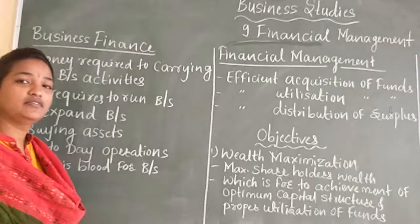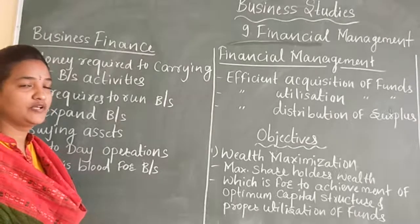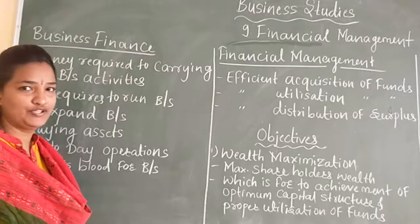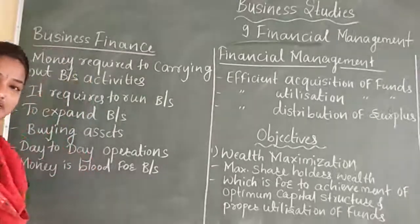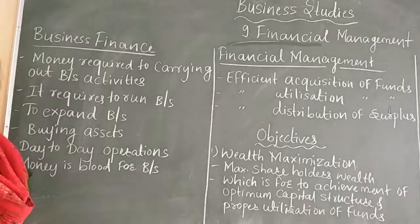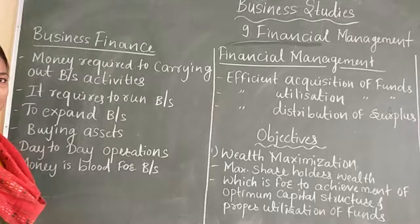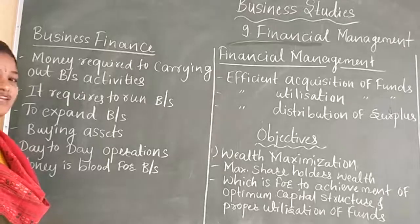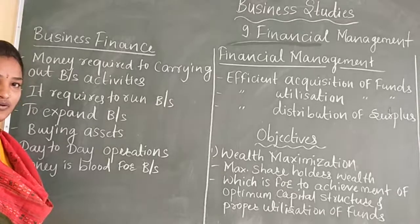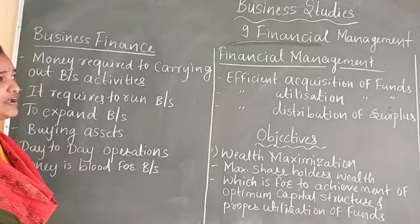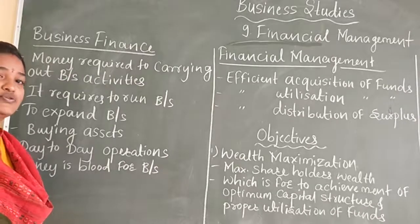From business studies Part 2, the first chapter is financial management — chapter number 9. So, what is financial management? The name itself indicates what it is. Finance means money or capital, and management is what you already learned in chapter 3. Finance means how we can manage the money for a business.